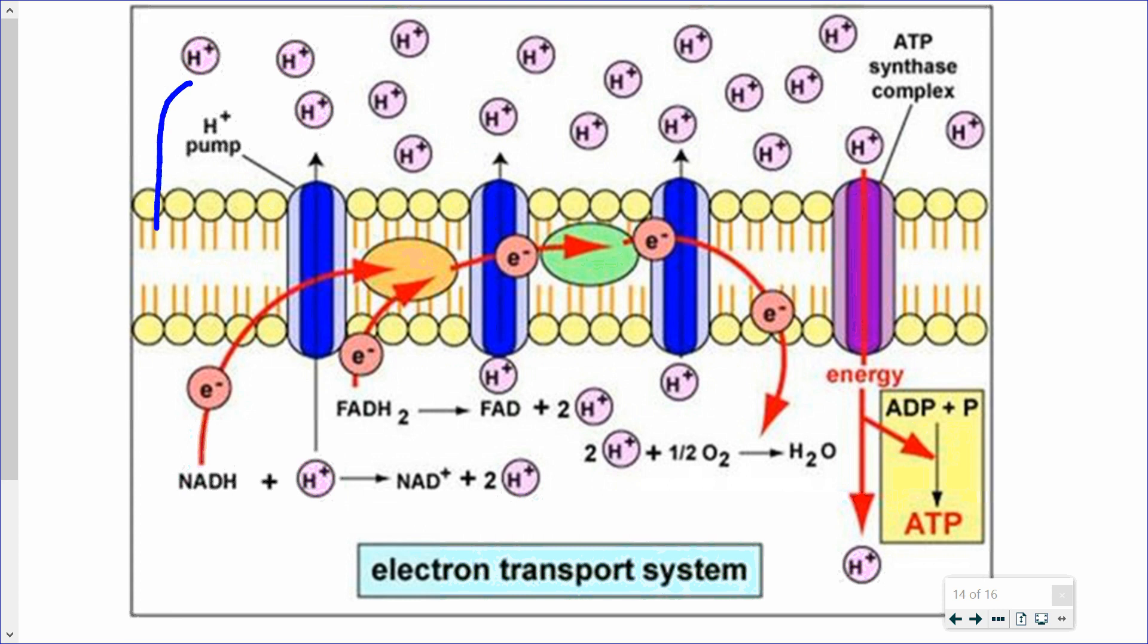Ions cannot pass through a phospholipid bilayer. That simply cannot happen. So in order for these protons to make it back into the matrix, they only have one route, and that is passing through this protein right here, transmembrane protein, which is also an enzyme, and this is the ATP synthase. So as those protons are going through the ATP synthase, they're using that form of energy, the electrochemical potential, the concentration gradient, and using that to combine together ADP and phosphate to make our ATP.